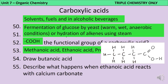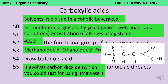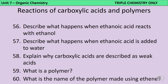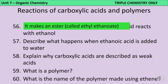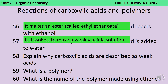When ethanoic acid reacts with calcium carbonate it releases carbon dioxide, which can be bubbled through limewater which will turn cloudy. When an alcohol reacts with a carboxylic acid it produces an ester; when ethanoic acid and ethanol react together this produces the ester called ethyl ethanoate. When carboxylic acids are added to water they produce a weakly acidic solution — pH still lower than 7 but comparatively high. Carboxylic acids are called weak acids because when they dissolve in water they incompletely ionize to release hydrogen ions.